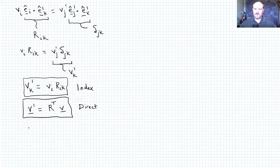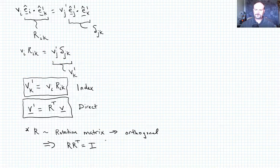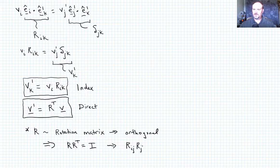A couple things to note. R is a rotation matrix. And it's orthogonal. What does that mean? Well, that implies that R times R transpose is equal to the identity matrix. Okay. So we could also similarly write that as R_ij times R_jk is equal to delta_ik. Okay. So that's what we mean by that. We're going to make use of that here shortly.